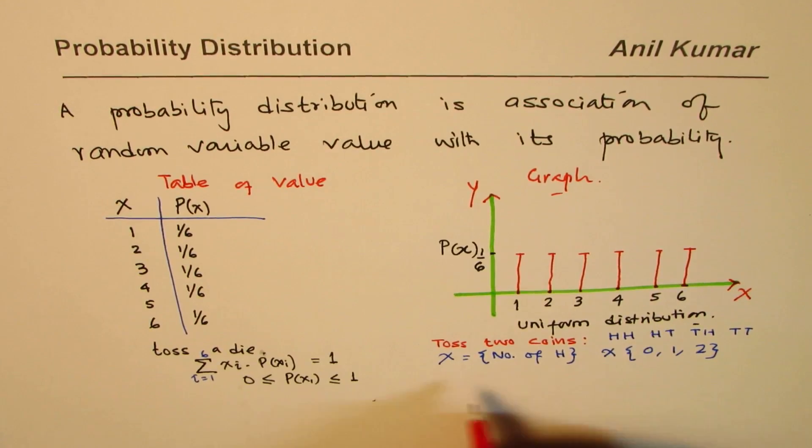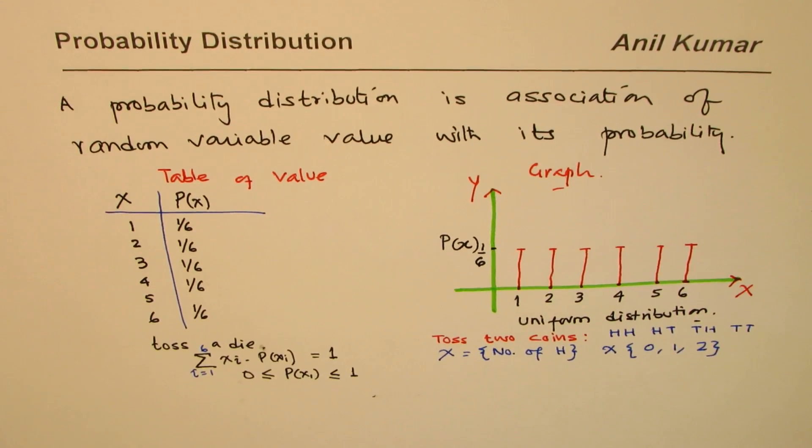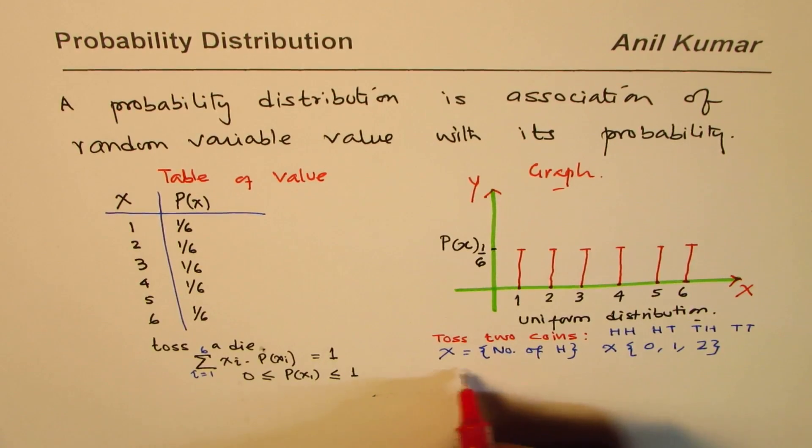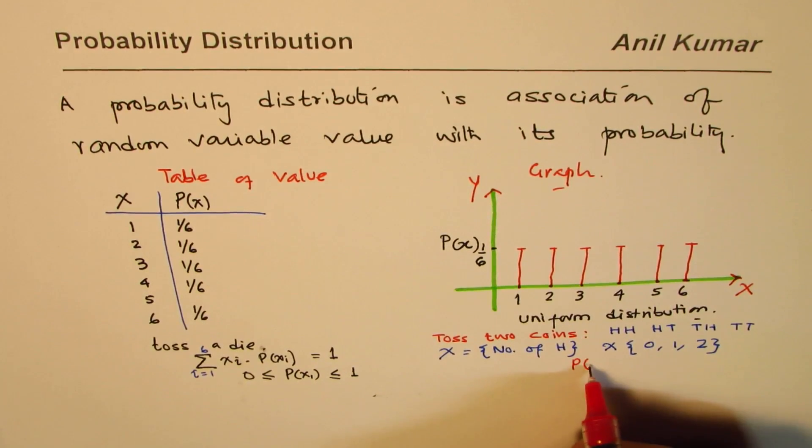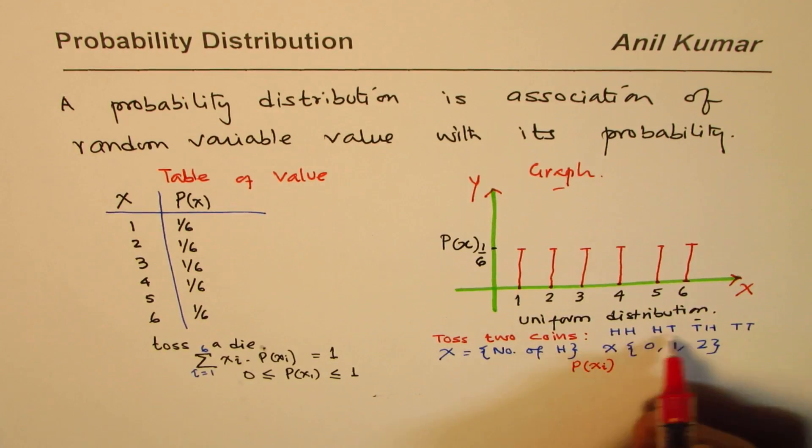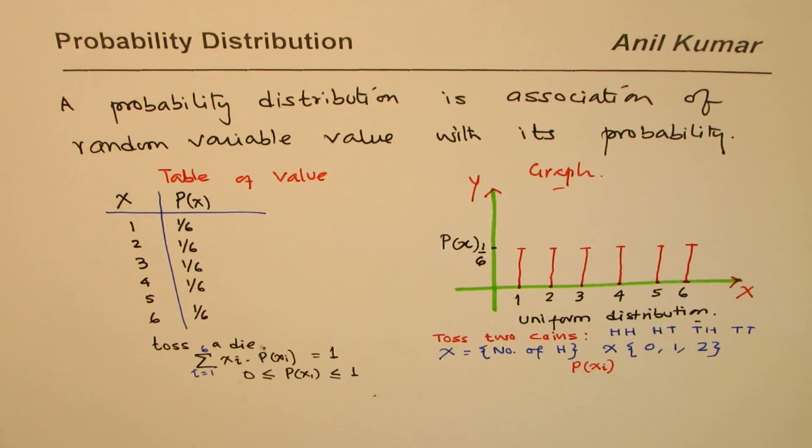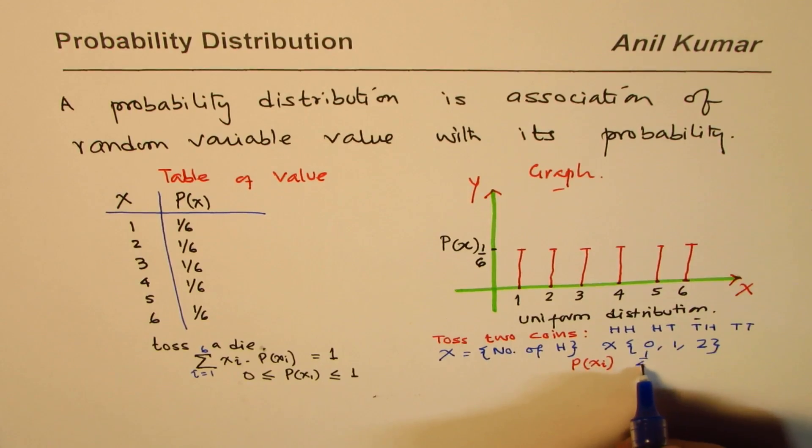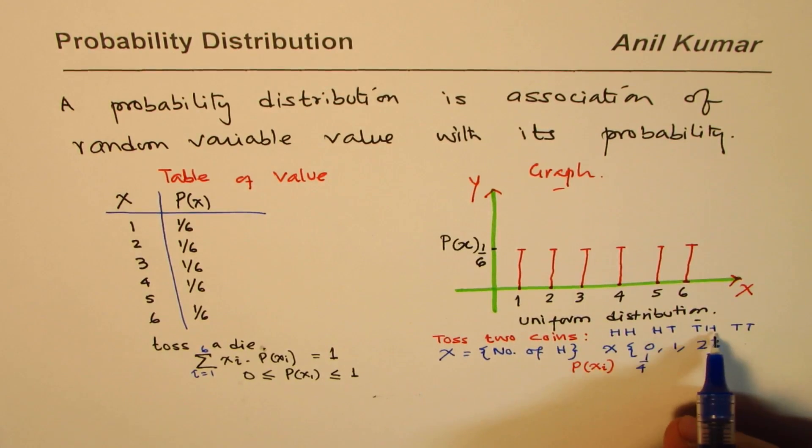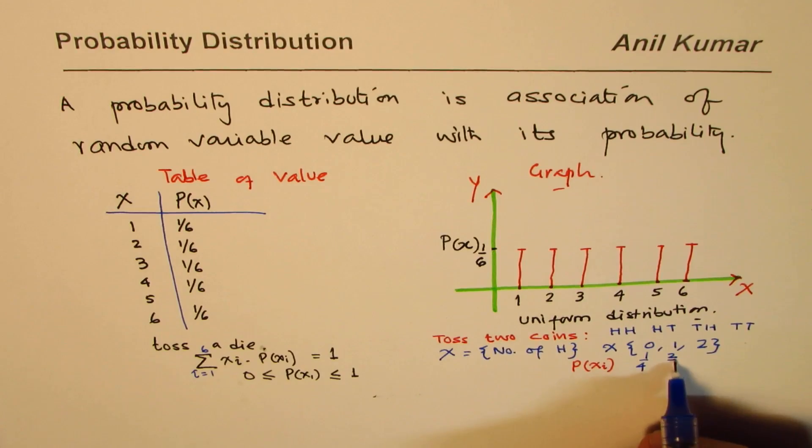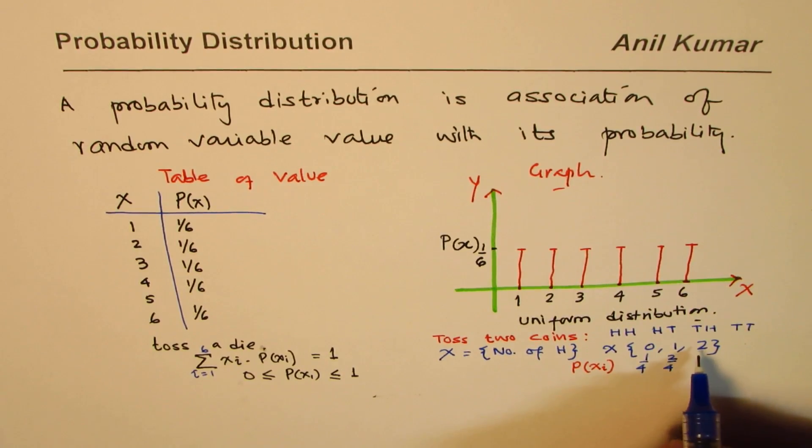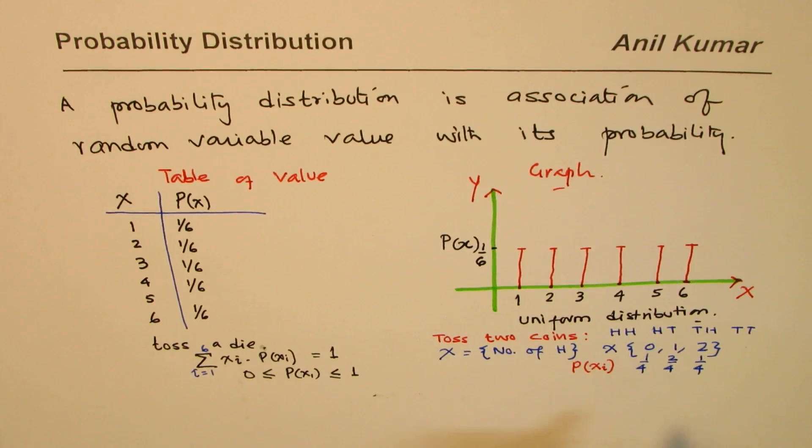What are their probabilities? Probabilities could be shown in the table as probabilities for x i's. For 0 heads, we have 1 out of 4. For one head, it is 2 out of 4, which is same as half, and for two heads, it is 1 out of 4.